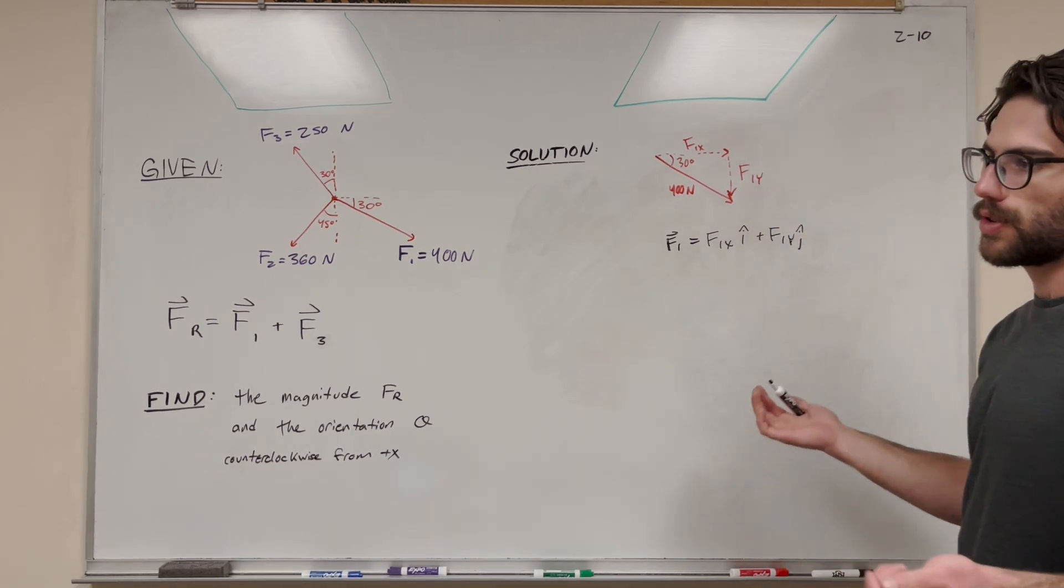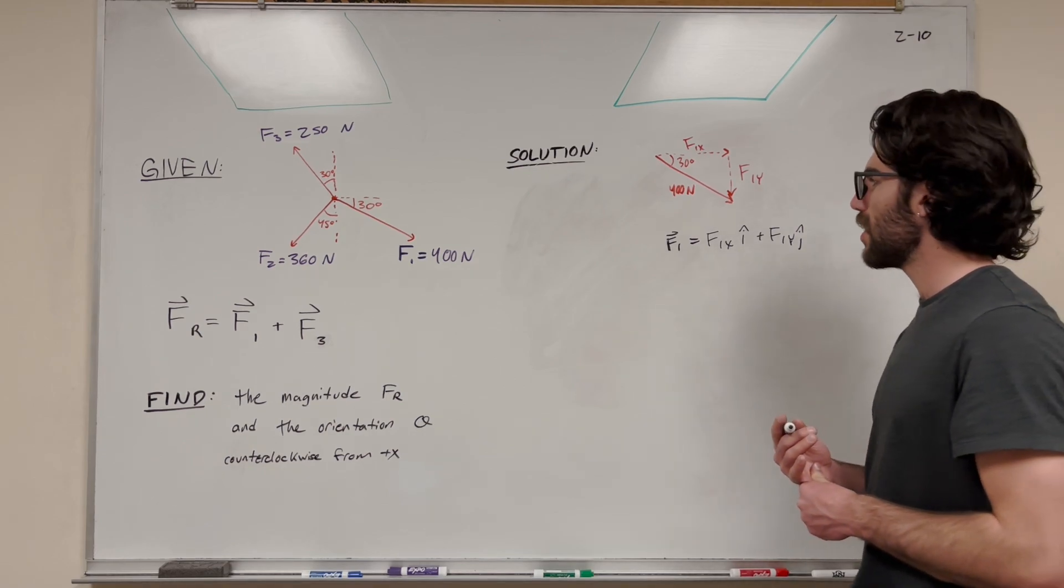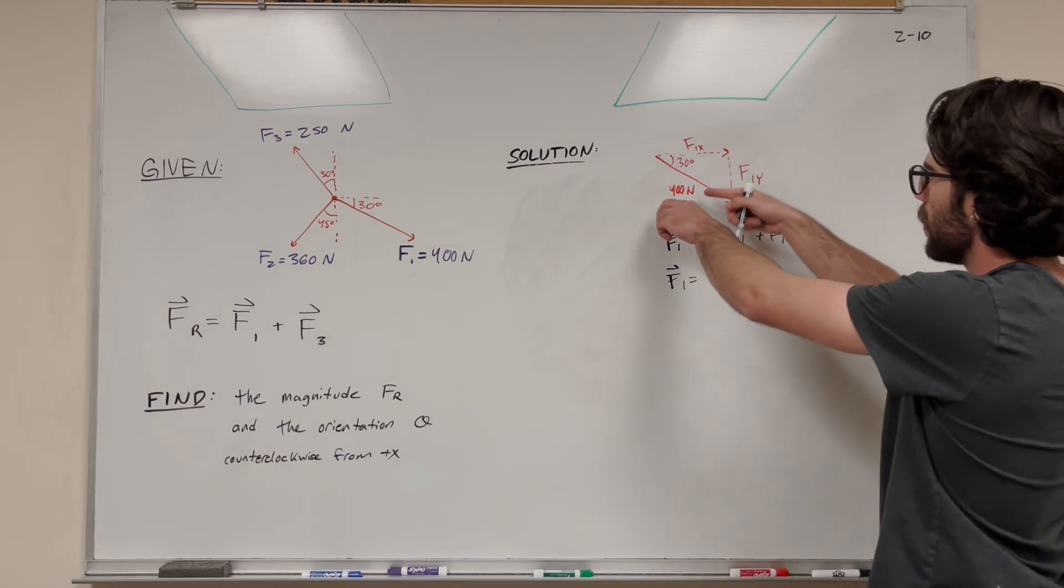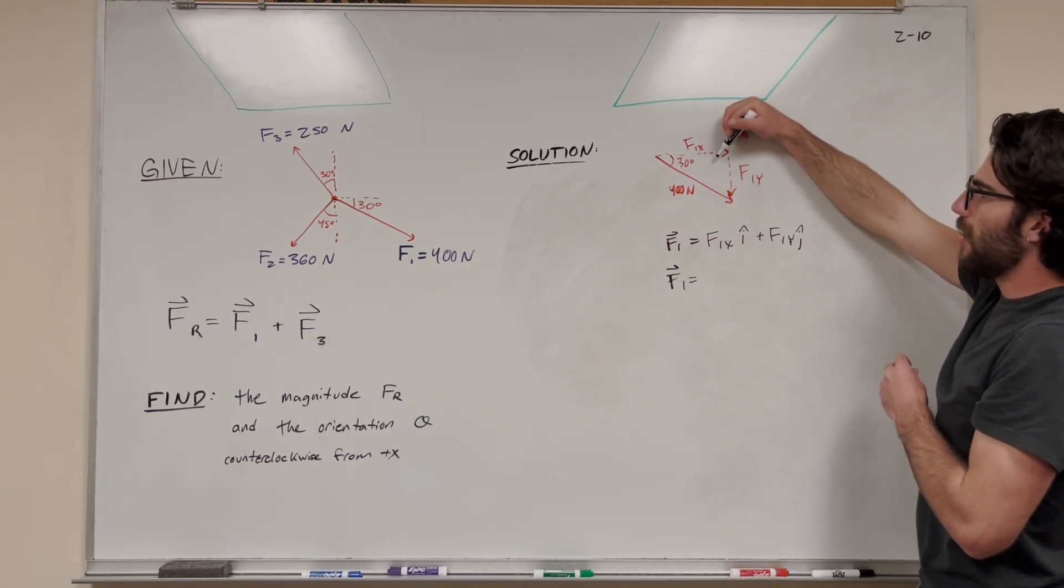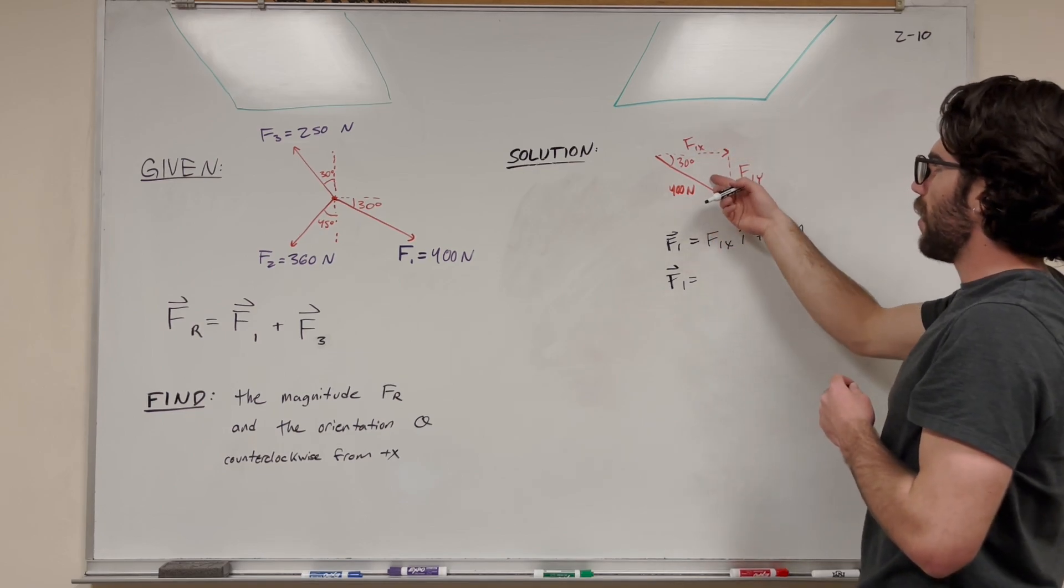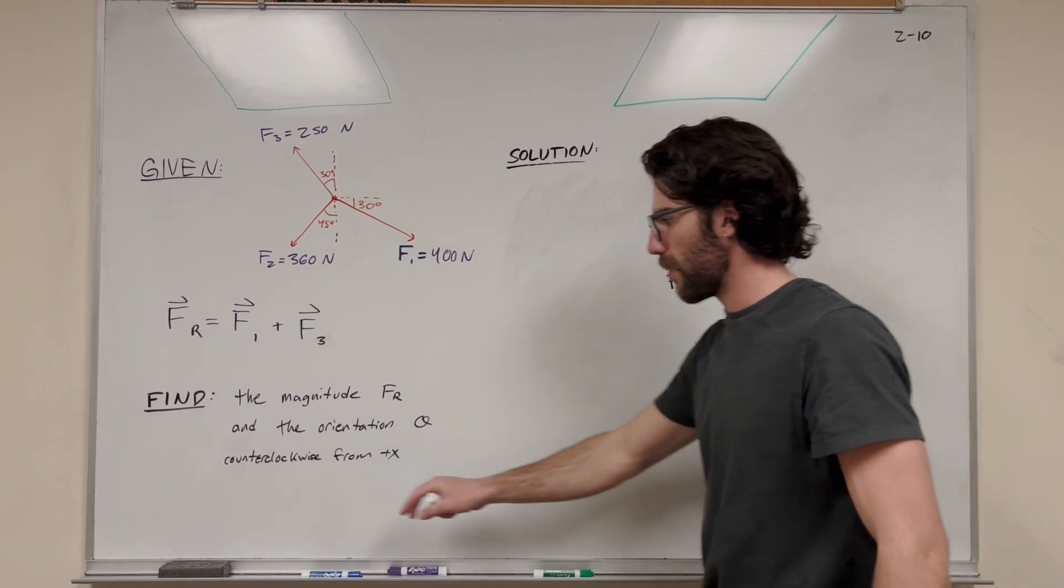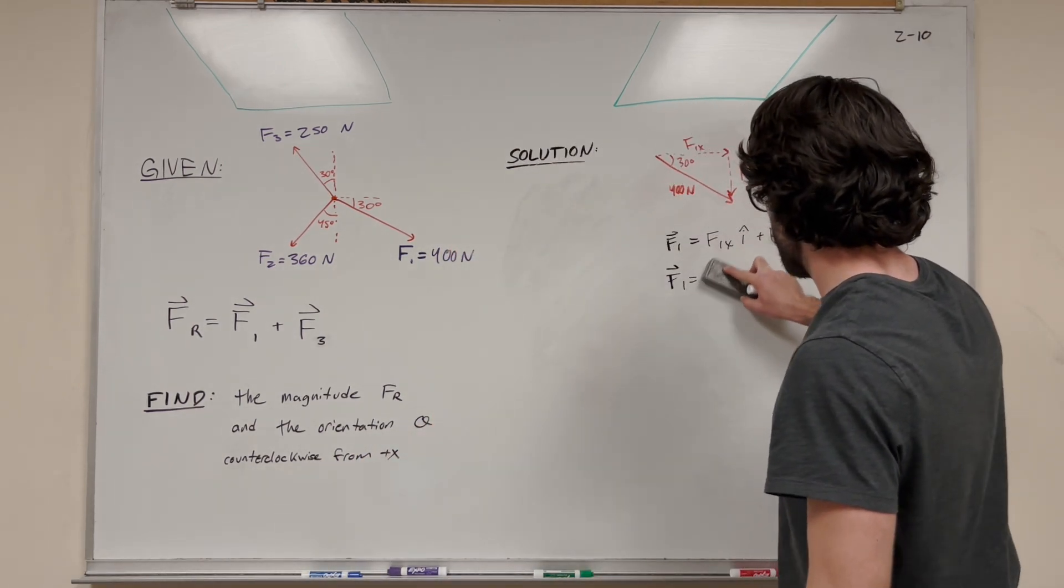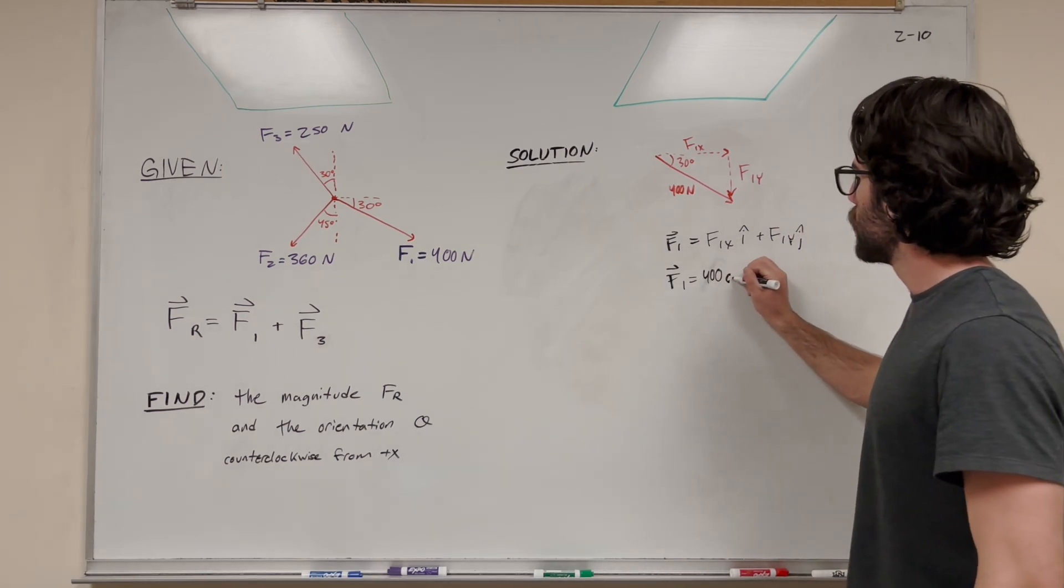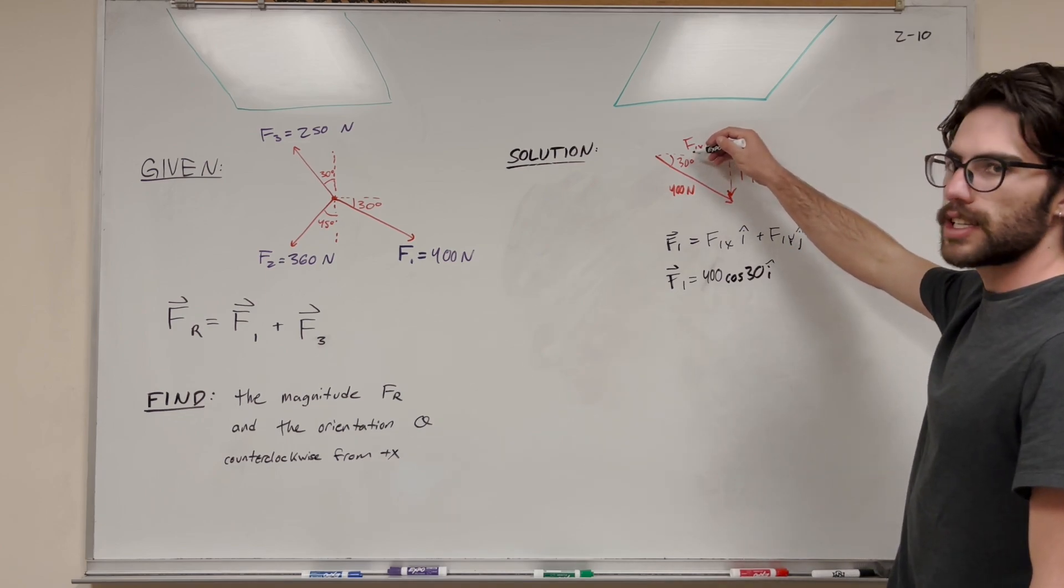How do we find this? We need to do trigonometry. I break this down more clearly in the last video. For F1x, this is laid down flat and is adjacent to that angle. So to project this 400 onto the adjacent side, we do 400 newtons times cosine of 30 degrees. We use cosine because it's adjacent to the angle.